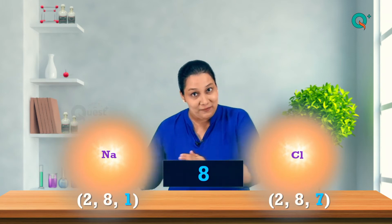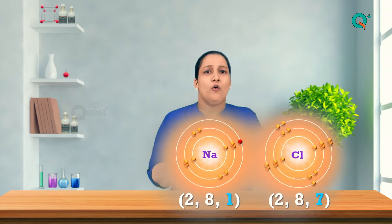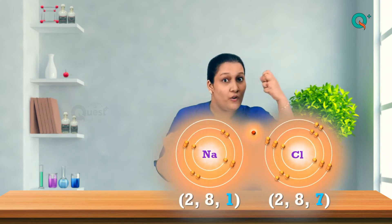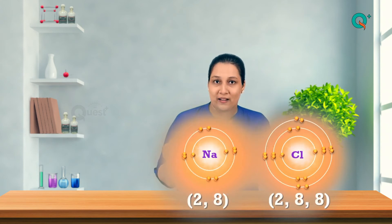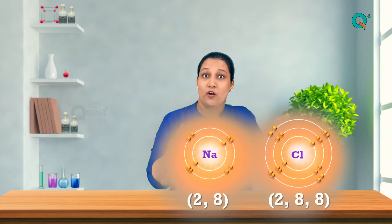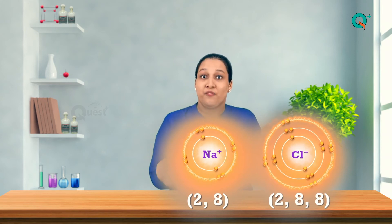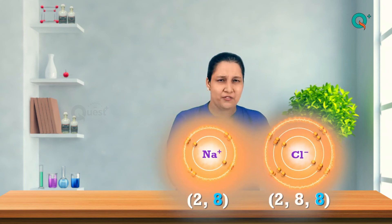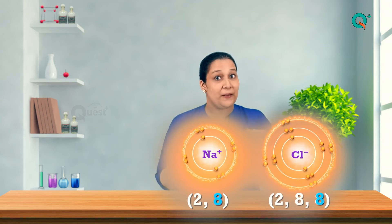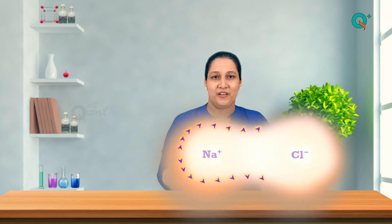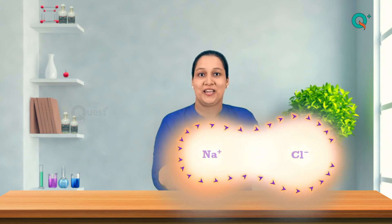When sodium comes near chlorine, chlorine being highly electronegative pulls out an electron from sodium's outermost shell, and that is how both of them attain an octet configuration. The formed ions have an attractive force between each other, and chlorine being highly electronegative pulls the bond towards itself — and that is how you get the formation of NaCl salt.